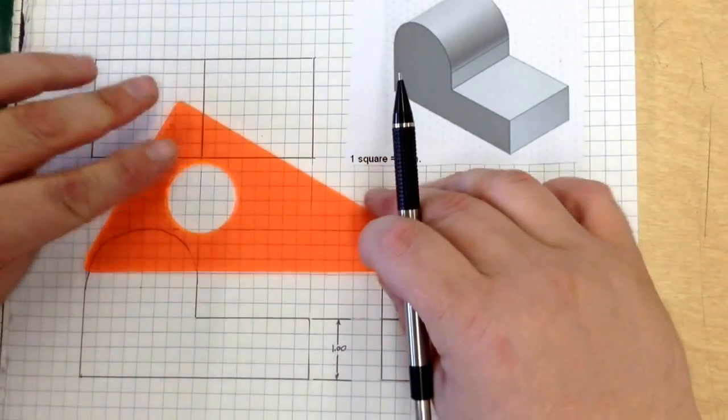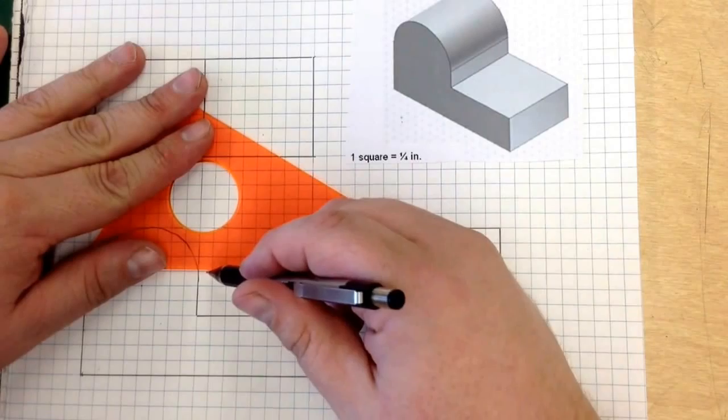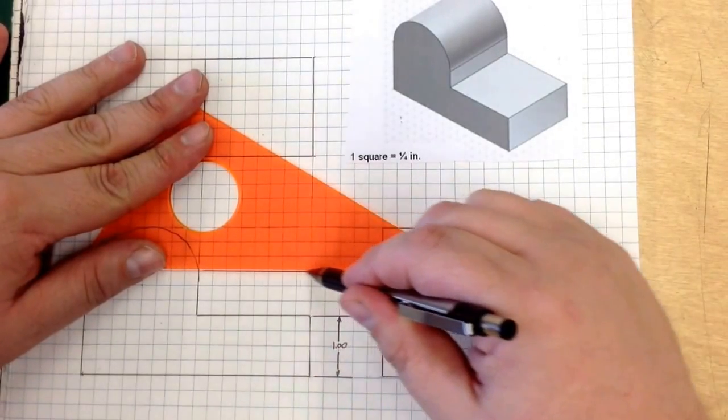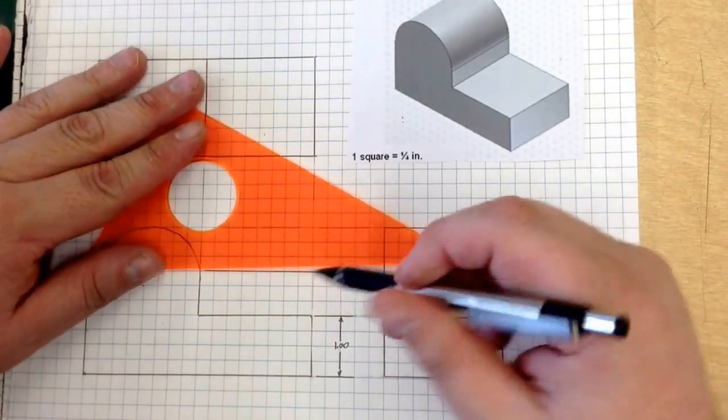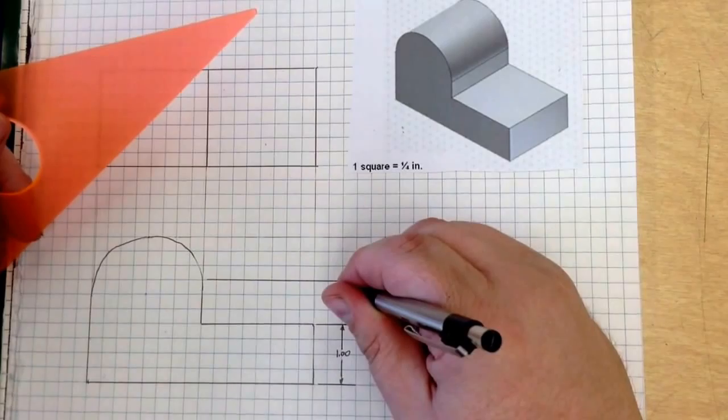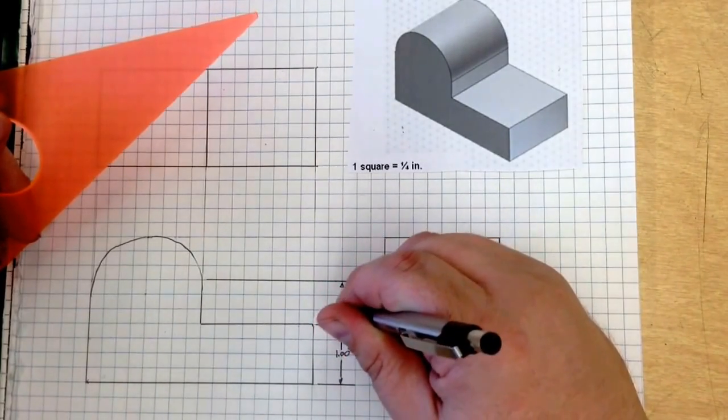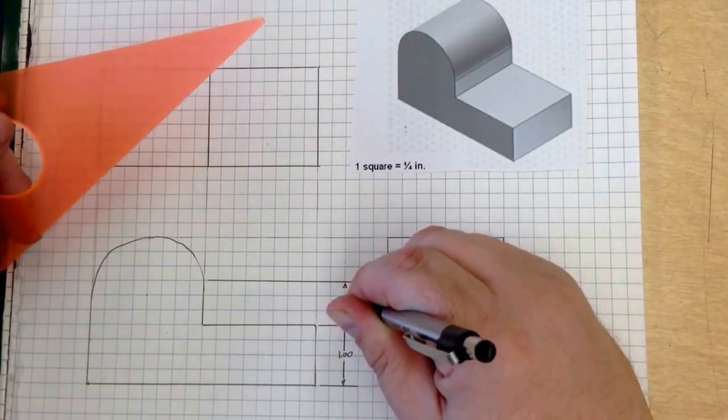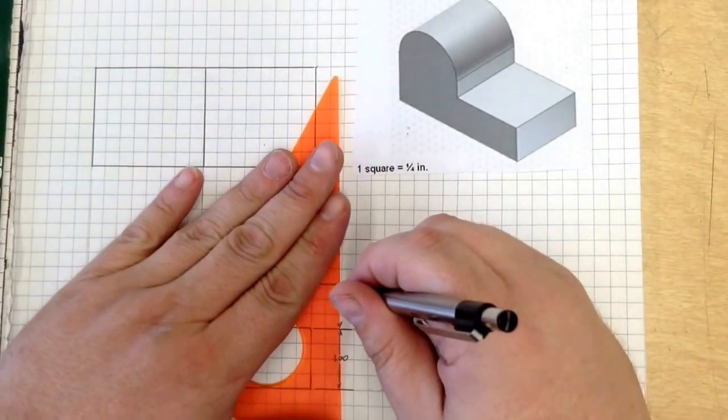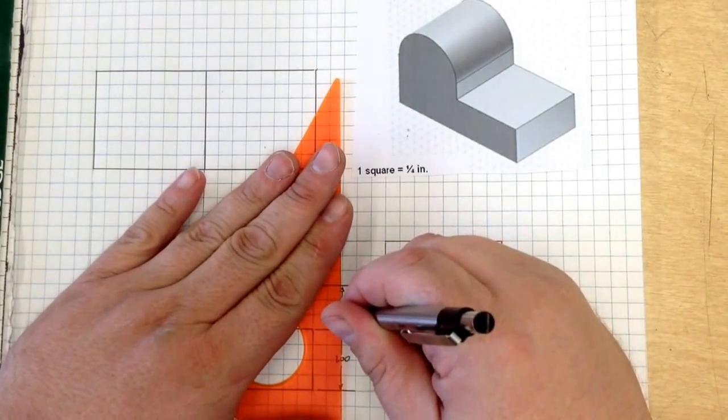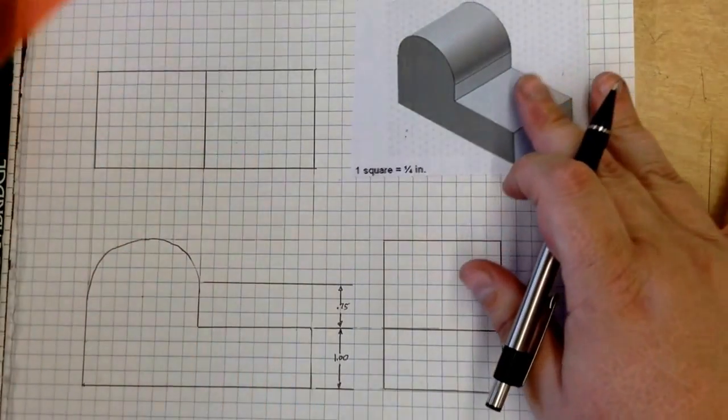Now next moving up, this is three blocks, so it's 0.75. So right here, bring this across, arrow, arrow, 0.75, and then straight down like so.